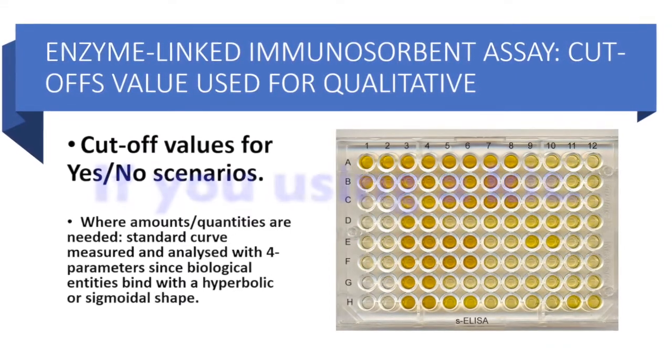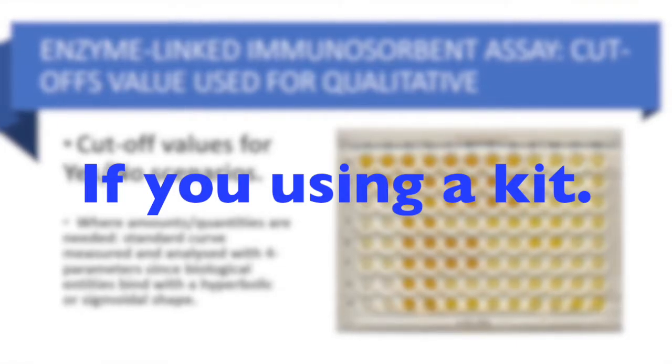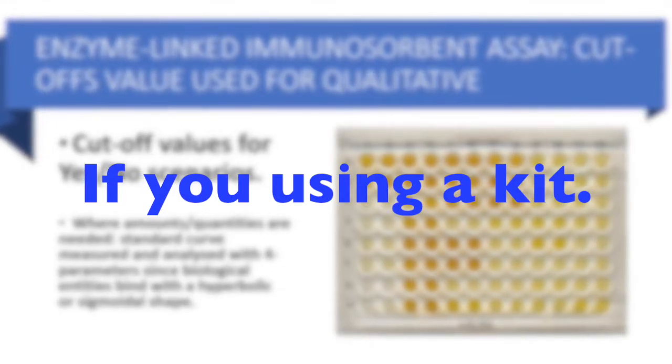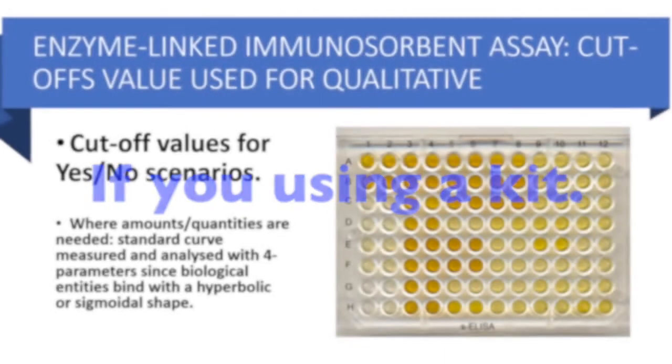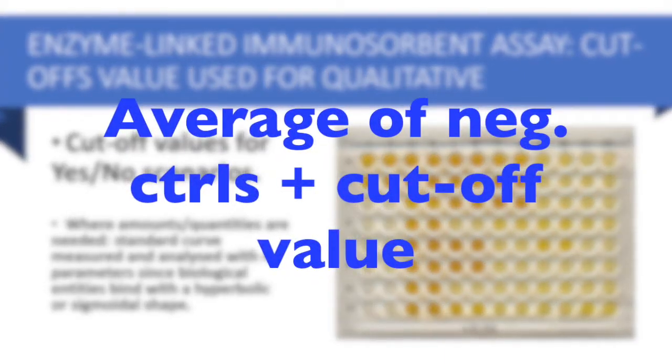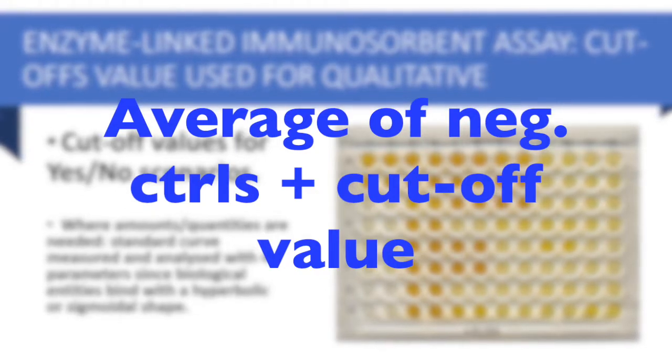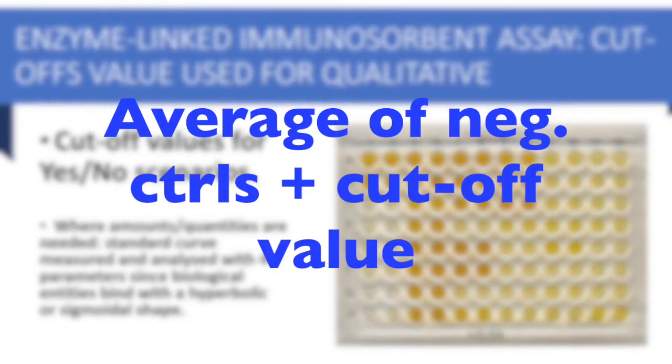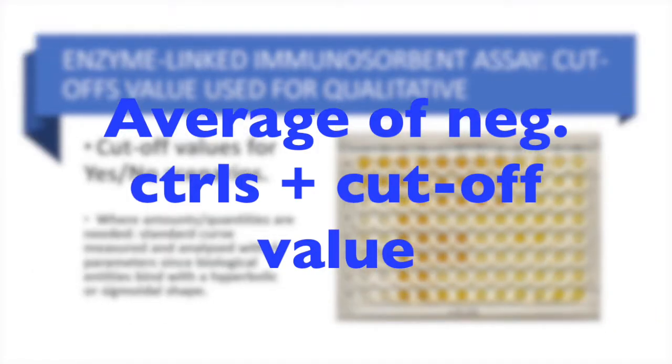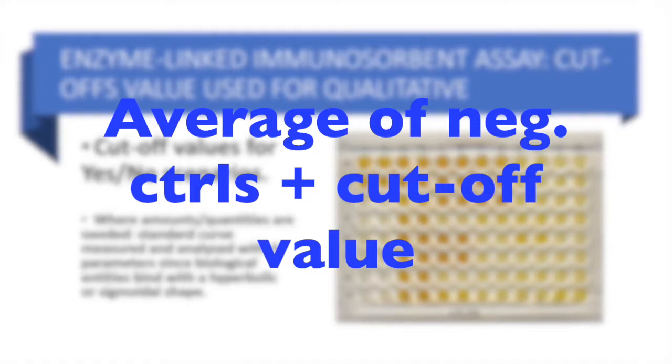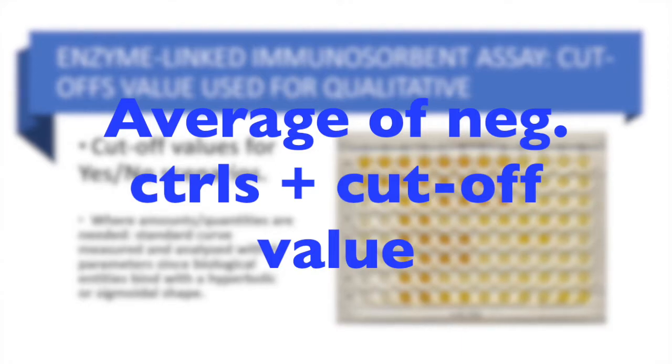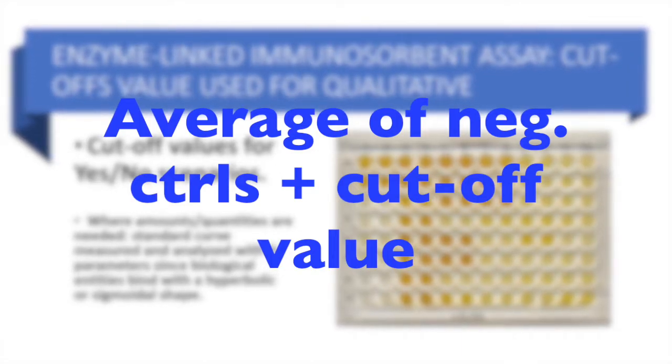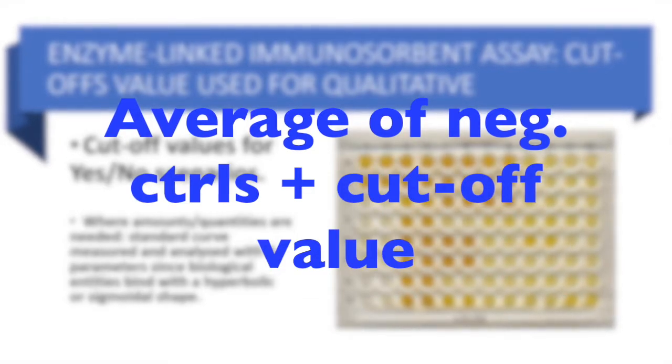The cut-off value would usually be your reading of the negatives, whatever absorbance your negative has where there's no antibody-antigen interaction, plus a particular amount. You're measuring optical densities with the spectrophotometer. So you say plus 0.4, for instance, and that's your cut-off. So it's your negative read plus a value. Anything above that is considered positive. Anything below that is considered negative.